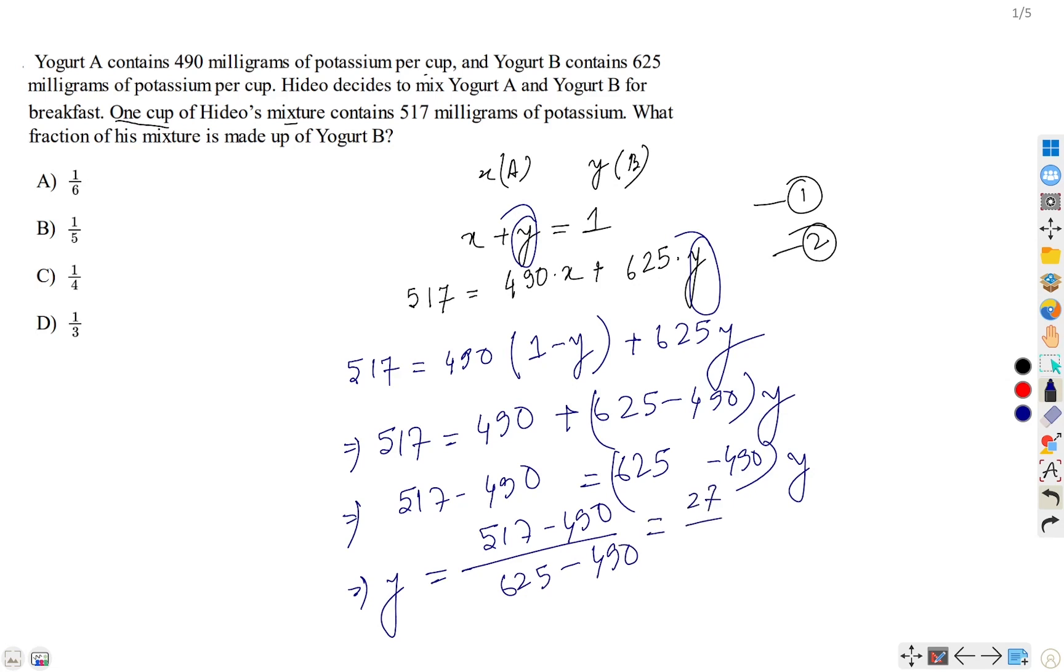27, 135, simplifying, this equals 1/5. So, we obtain y = 1/5. That is, we have taken 1/5 of the potassium from cup B, therefore answer B is the correct choice.